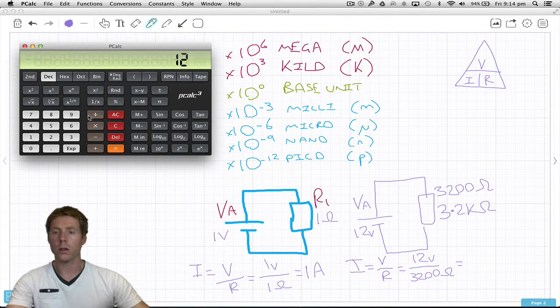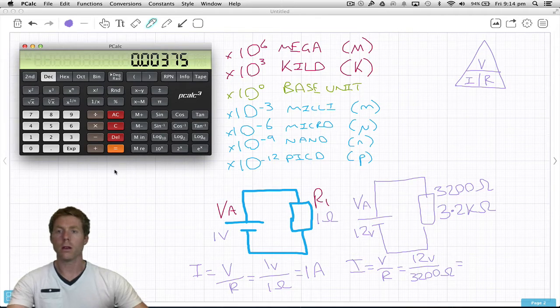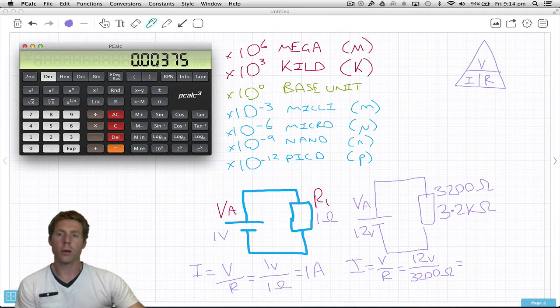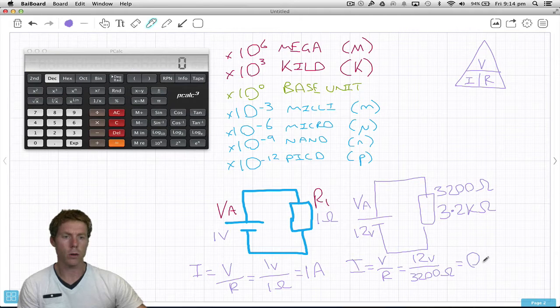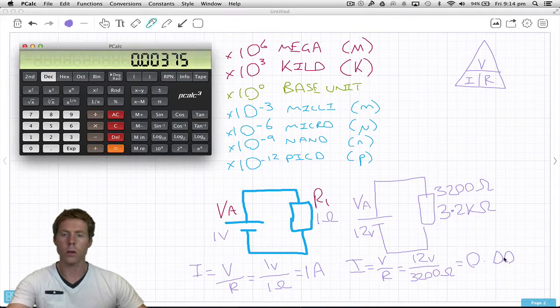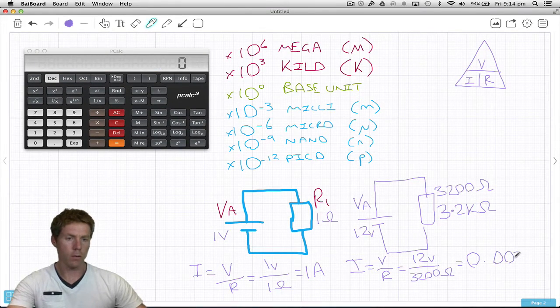12 volts divided by 3200 ohms, and we get 0.00375. That's a little more awkward to write than just 1 amp, but let's write it down: 0.00375 amps.